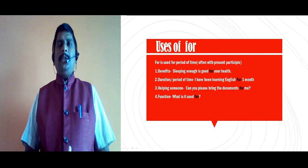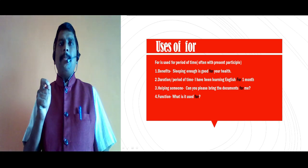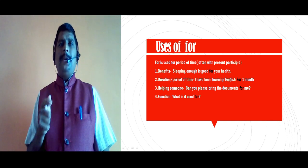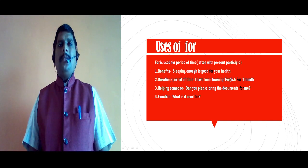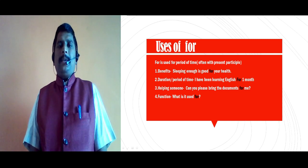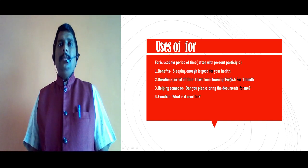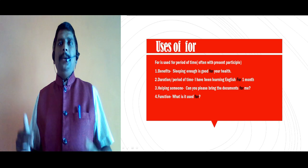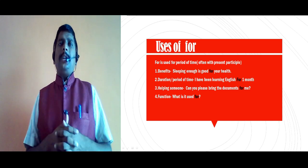Then, duration: 'for' is used for duration of a period of time — for example, I have been learning English for one month. It is a period of time; it is duration of time. Helping someone: can you see the next example? My sister brought a dinner to me — in this particular sentence 'to me' is a destination. My boss brought lunch for me — in this particular sentence 'for' is used to help.